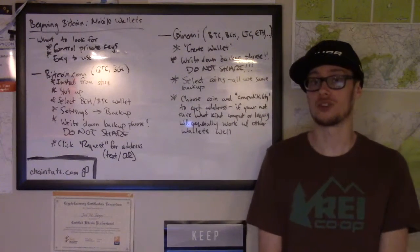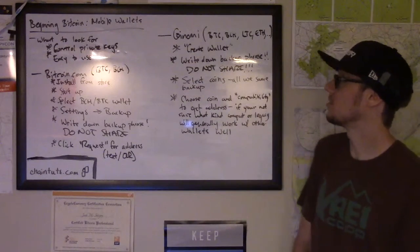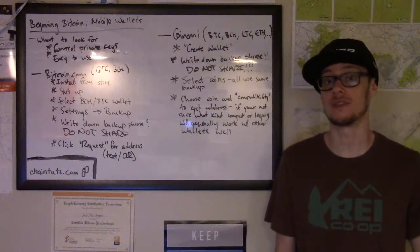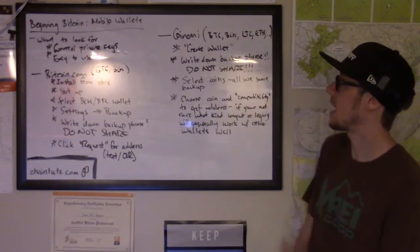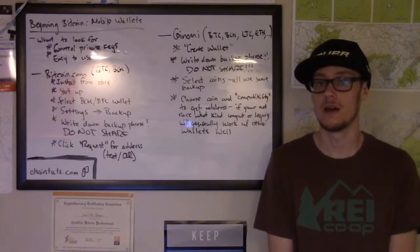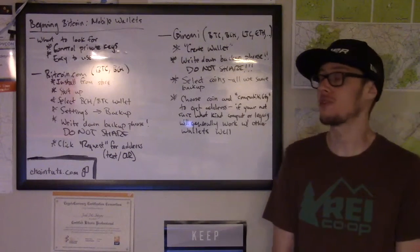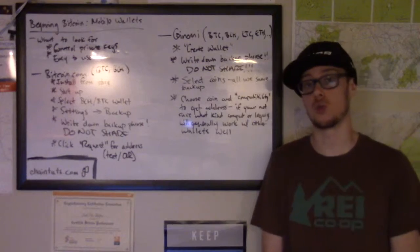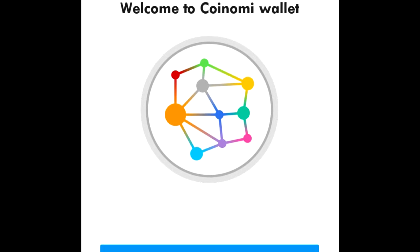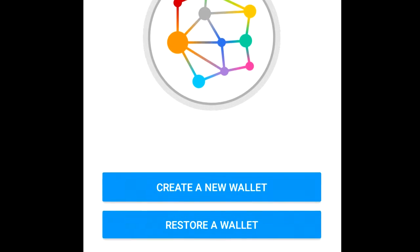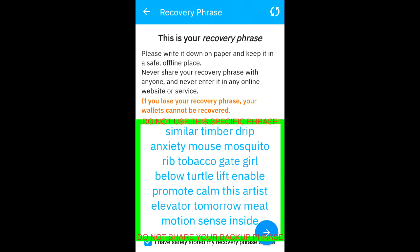Another wallet I'll show you is the Coinomi wallet. This is a really cool multi-asset wallet that supports hundreds of different cryptocurrencies, including the big four I talk about a lot: Bitcoin, Bitcoin Cash, Litecoin, and Ethereum. When you open up the app for the first time you'll see an option to create or restore a wallet — go ahead and create a new wallet. You'll see a 24-word backup phrase on the screen, and just like with the Bitcoin.com wallet you'll want to write it down and store it somewhere secure so that if anything happens to your phone you still have access to all of your funds.